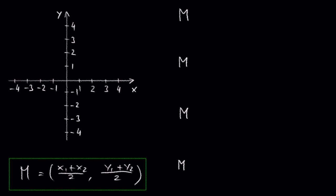Let's say we have the points A, negative 4, comma 4 and B, negative 2, comma 1.